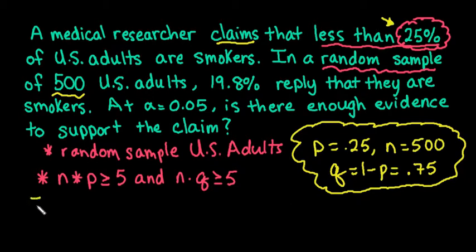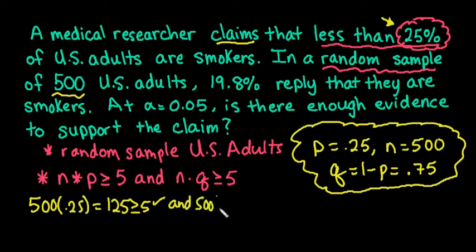So if I plug in those values, 500 times 0.25 gives me 125, which is definitely greater than or equal to 5. And 500 times 0.75 is equal to 375, which again is greater than or equal to 5. It's important to show out that you actually checked them and not just put down the conditions and put a checkmark next to them. The only way that you can really show that you checked them is by writing them on your paper.